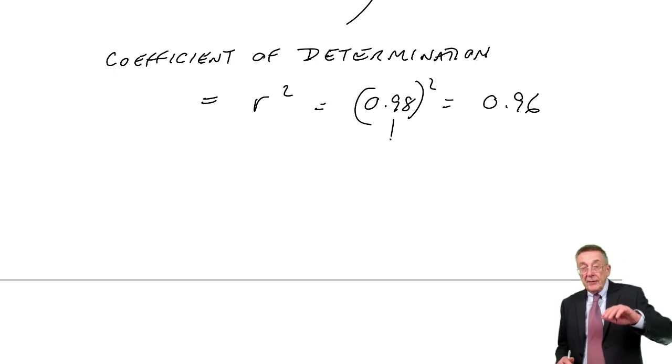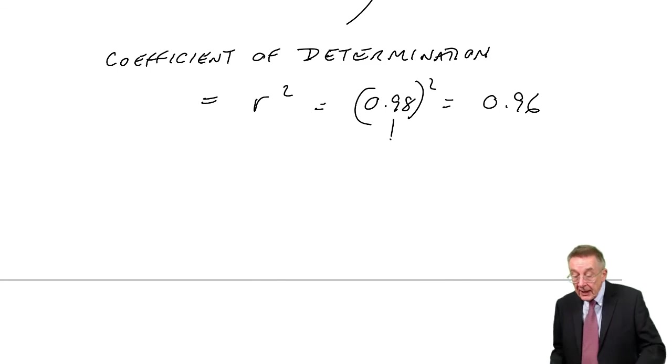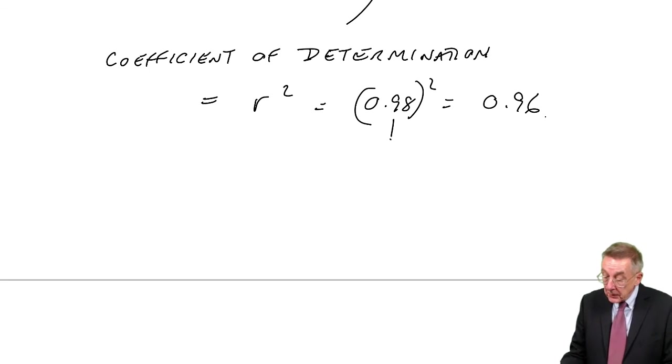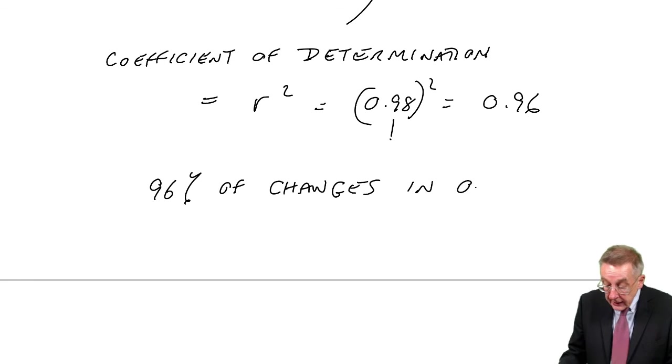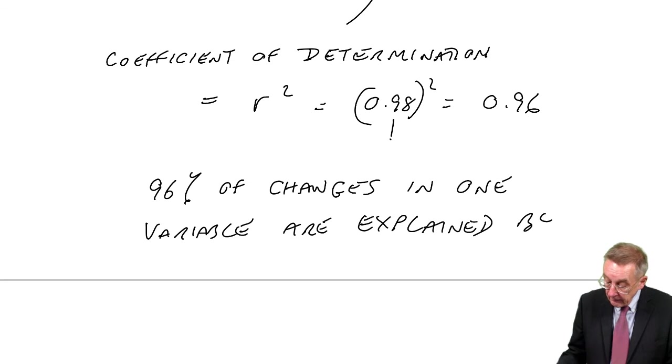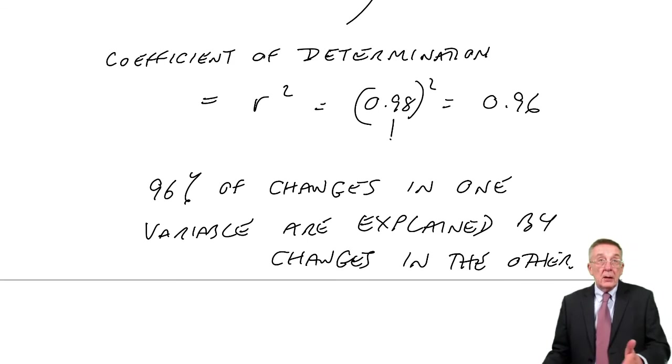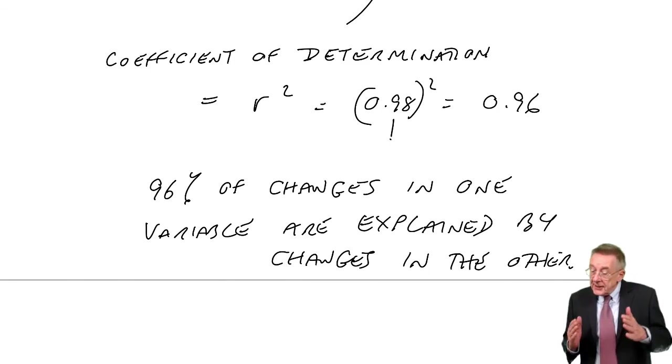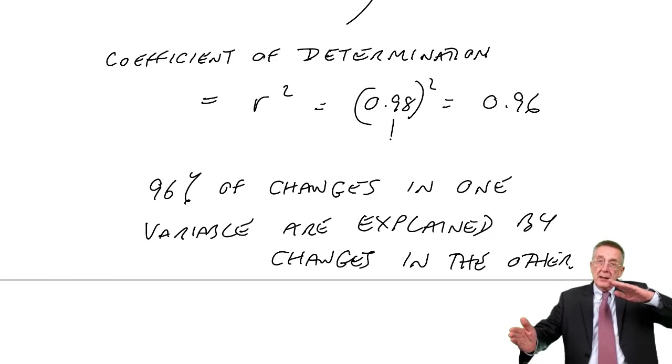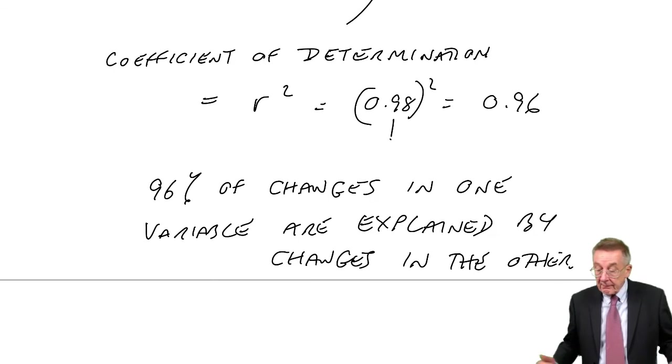So that's all it is. Watch the words, though. Coefficient of correlation is R. Coefficient of determination is R squared. And the relevance of it, it means that in our example, 96% of changes in one variable are explained by changes in the other. So in our example, as the number of units changes, you expect the cost to change. Well, 96% of the time, the cost is changing purely because of the units.